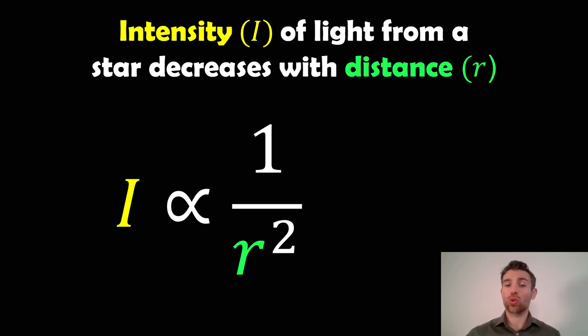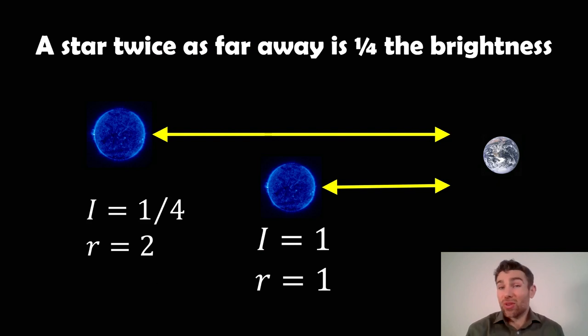That will drop off as a function of one over the distance squared. So as the distance increases, then the intensity is going to decrease by that factor. An example of that is if you've got two stars, one of those is twice the distance away from Earth than the first one, that one will be a quarter the brightness of the one that's half the distance.